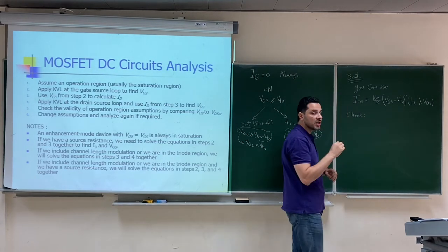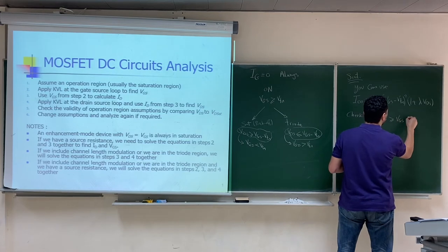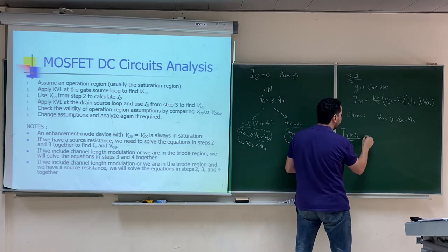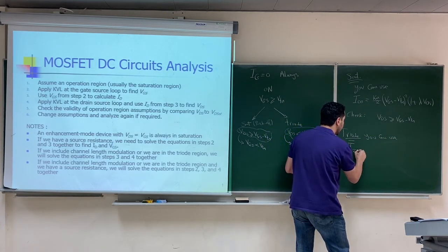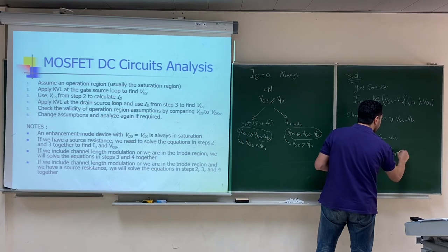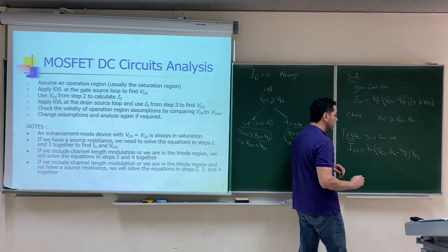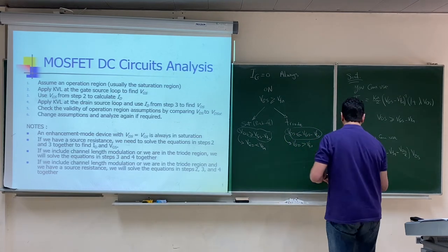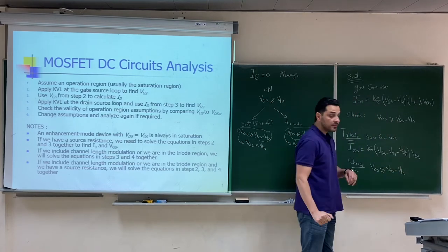After solving, you check the saturation condition: VDS must be greater than or equal to VGS minus V_threshold. If you instead assume triode, the current equation is: I_D = K_N × (VGS − V_threshold − VDS/2) × VDS. At the end you check the triode condition: VDS ≤ VGS − V_threshold.